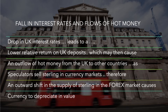Here's a quick chain of reasoning as to how a fall in monetary policy interest rates could lead to a fall in the currency. For example, if there's a drop in UK interest rates from their current levels, that leads to a reduced return on UK deposits compared to other countries, so you get less interest on your savings. This may then cause an outflow of hot money from the UK to other countries — perhaps Germany, the United States, or Switzerland. Speculators start selling sterling in the currency markets, causing an outward shift in the supply of sterling, which causes the currency to depreciate in value.